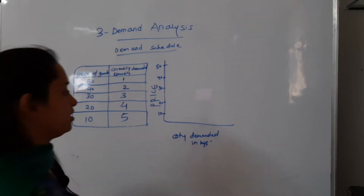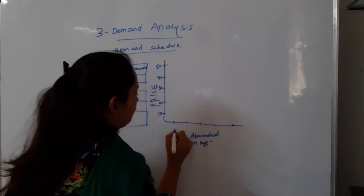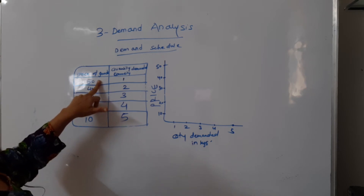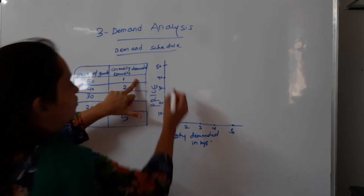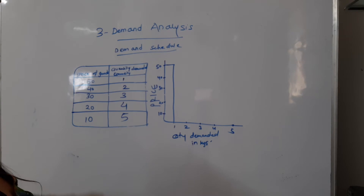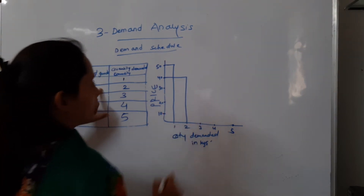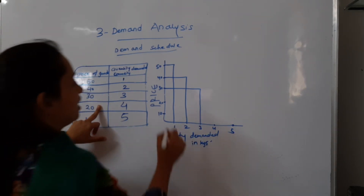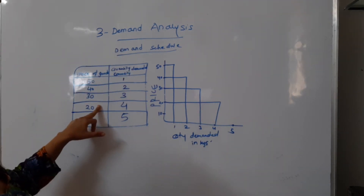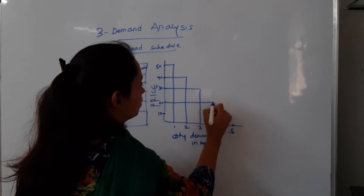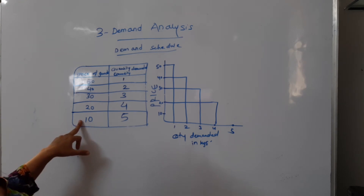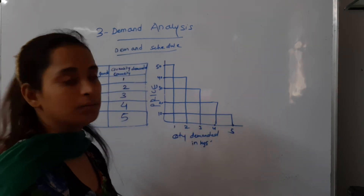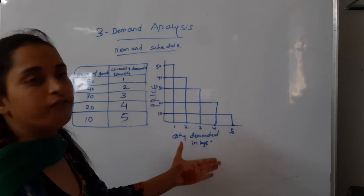Now, when prices of goods was 50, then only one commodity is demanded. When prices of goods was 40, demand increased to 2. When prices decreased to 30, demand is 3. When prices decreased to 20, there is an increased demand. When the prices of goods is 10 — the lowest — the quantity demanded is maximum. This is the graphical presentation of the demand schedule.